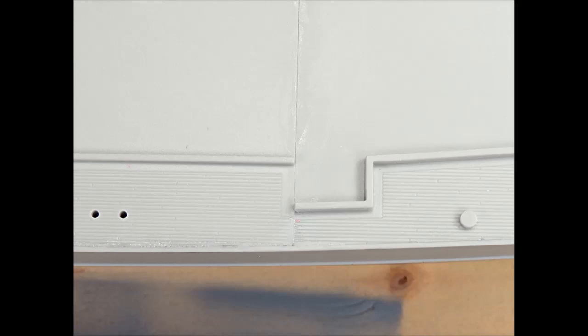The deck section seams on this 1-350th scale Alaska were very tight so only a small amount of superglue was required. After careful scraping and sanding the deck detail is ready for re-scribing.